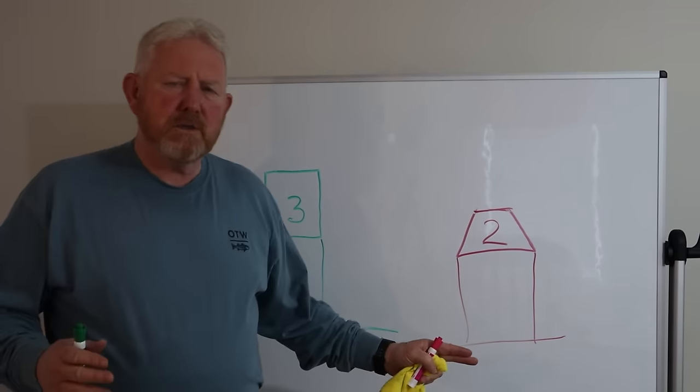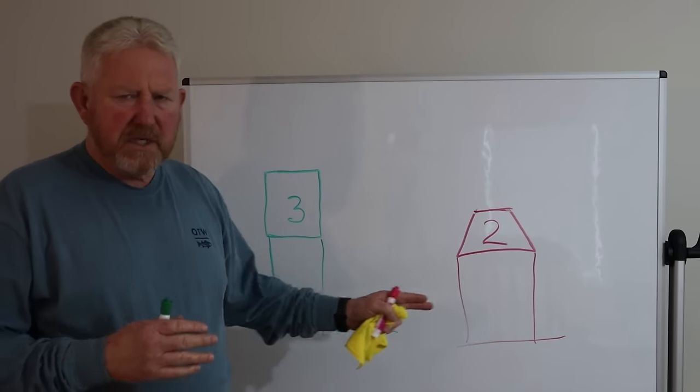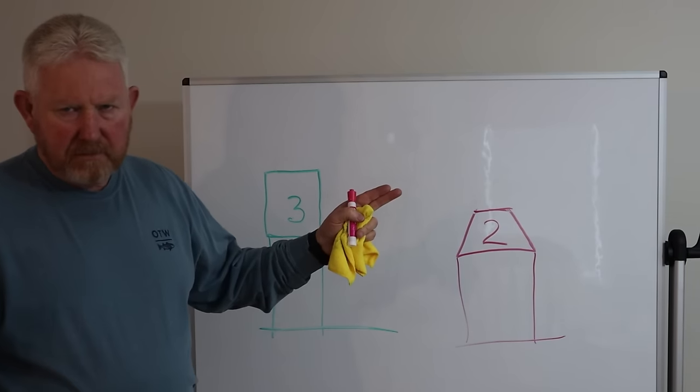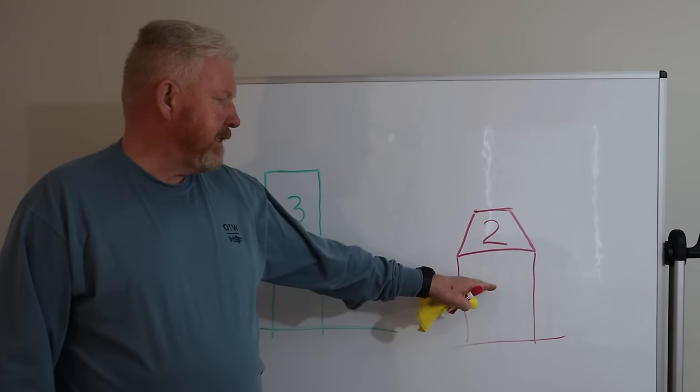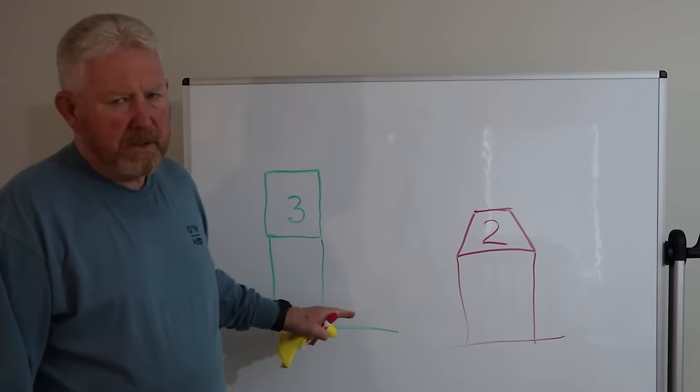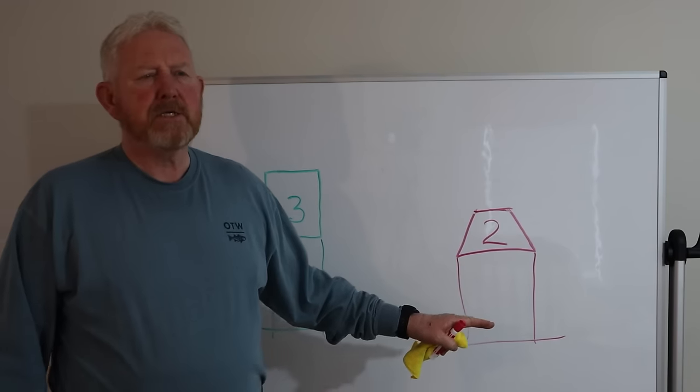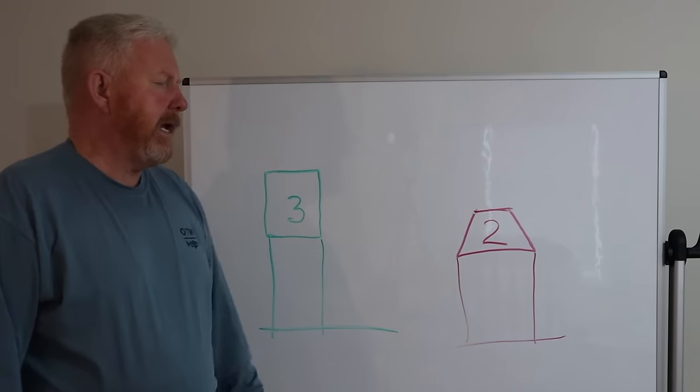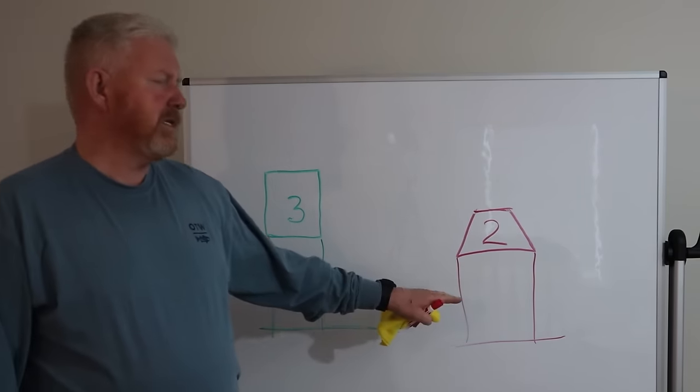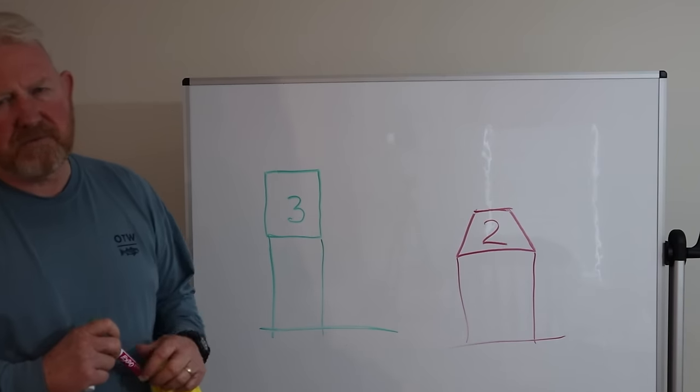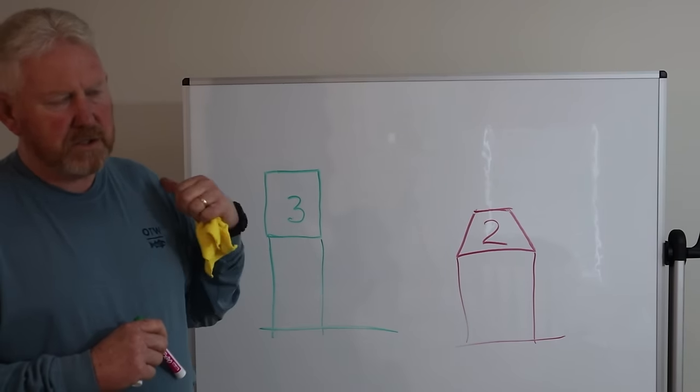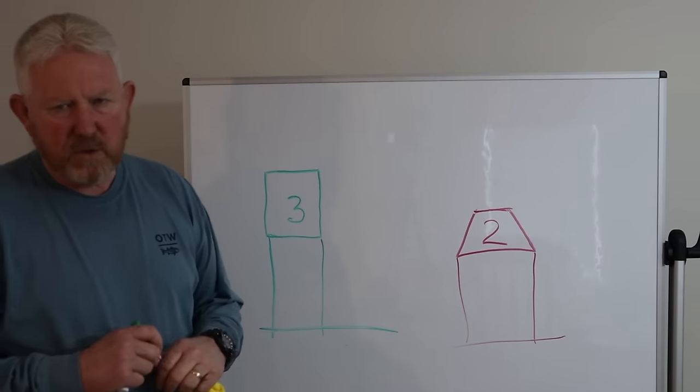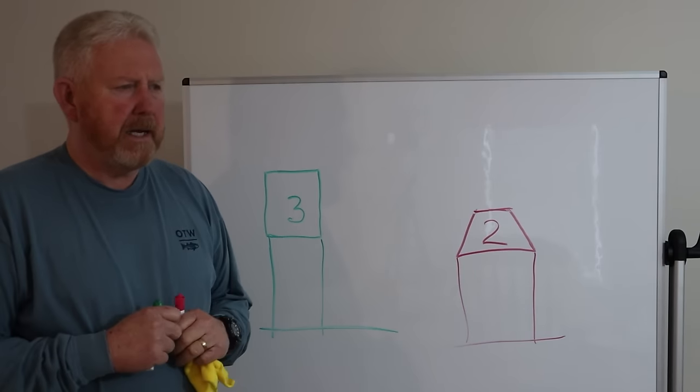When you get into larger buoys, they're not referred to as nuns and cans. They're just big red or green buoys. You're going to find that these are starting to be replaced with styrofoam. Some of these buoys have been in service since the 40s. They're usually on station for about six years. The Coast Guard takes them off, sends them to a depot, sandblast them and so on.